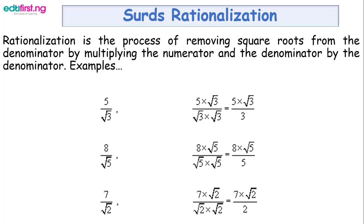The second rationalization example is 8 over root 5. The denominator is root 5, so multiply numerator and denominator by root 5: 8 root 5 over root 5 times root 5, which gives 8 root 5 over 5. The third example is 7 over root 2. Multiplying numerator and denominator by root 2 gives 7 root 2 over 2. In all examples, the denominator no longer contains a root.